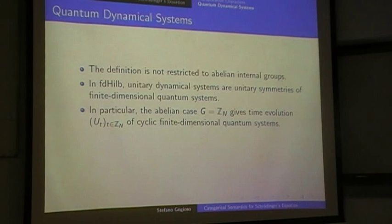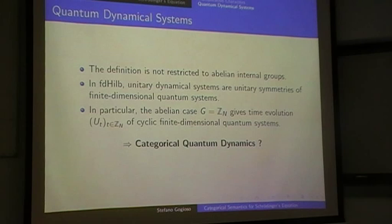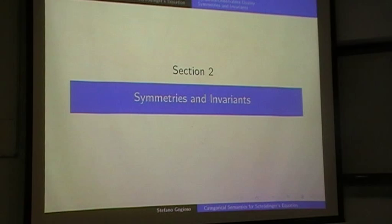I don't know if this will ever catch on, but just in case I'll say it here: it may be called categorical quantum dynamics. Since I said that they are called quantum symmetries, an important aspect of symmetries is that they have specific associated invariants, so this is a brief section on that.